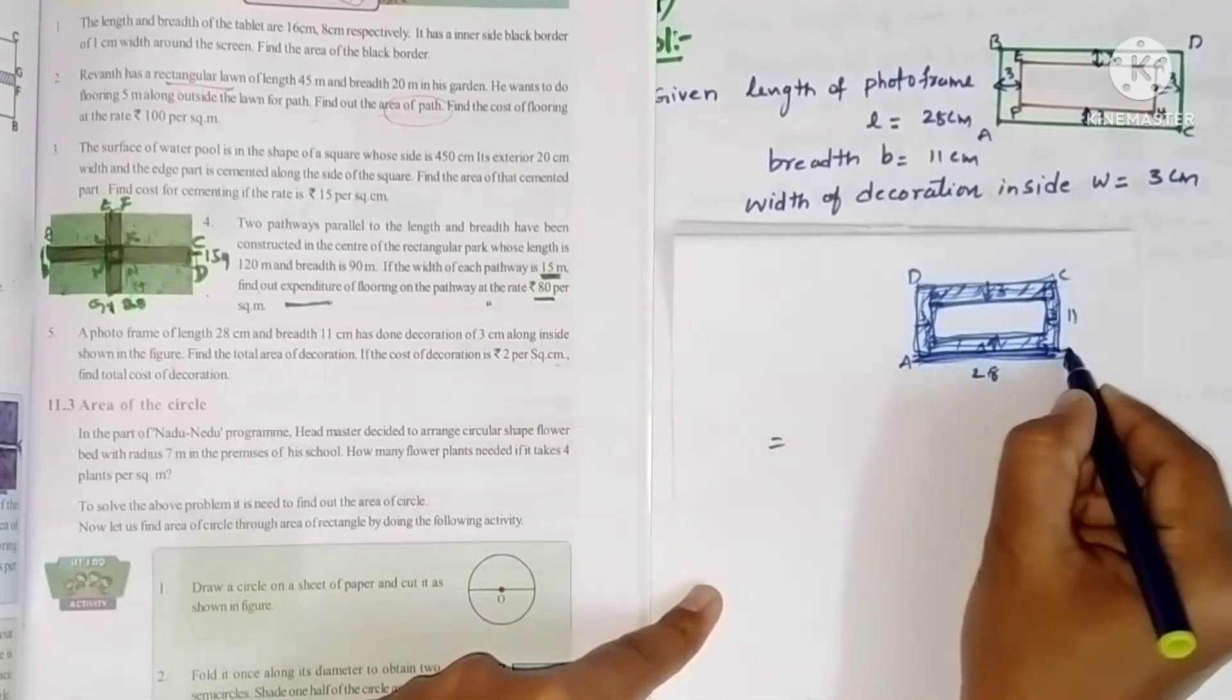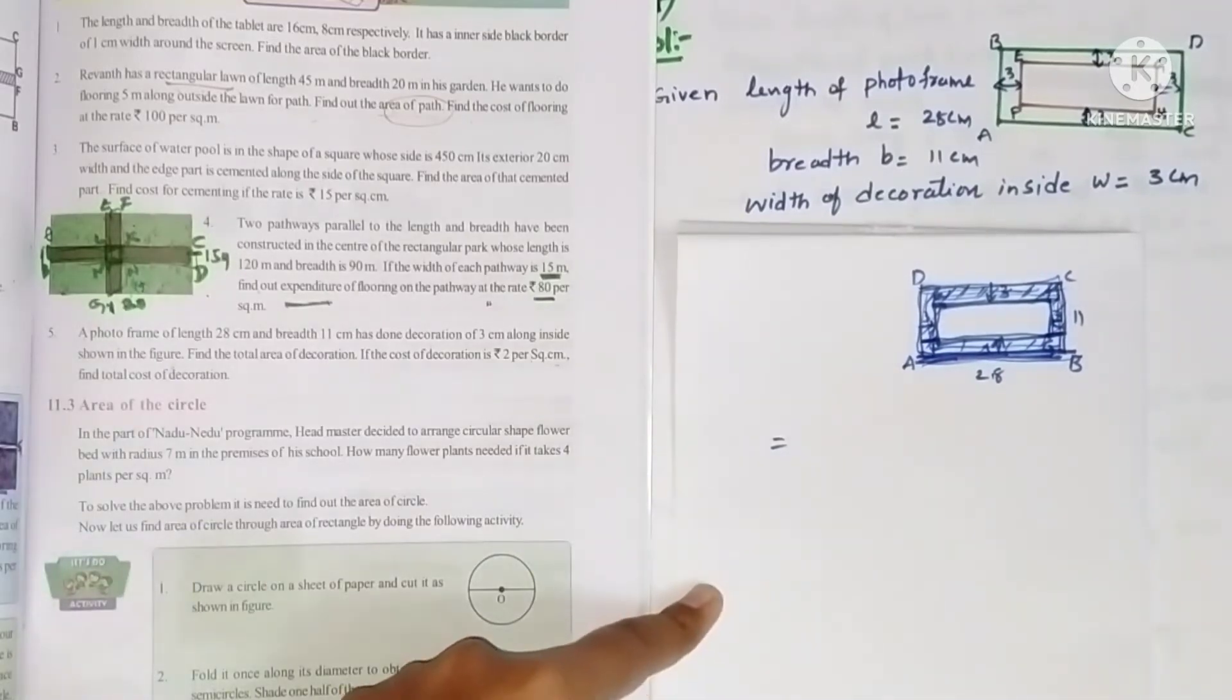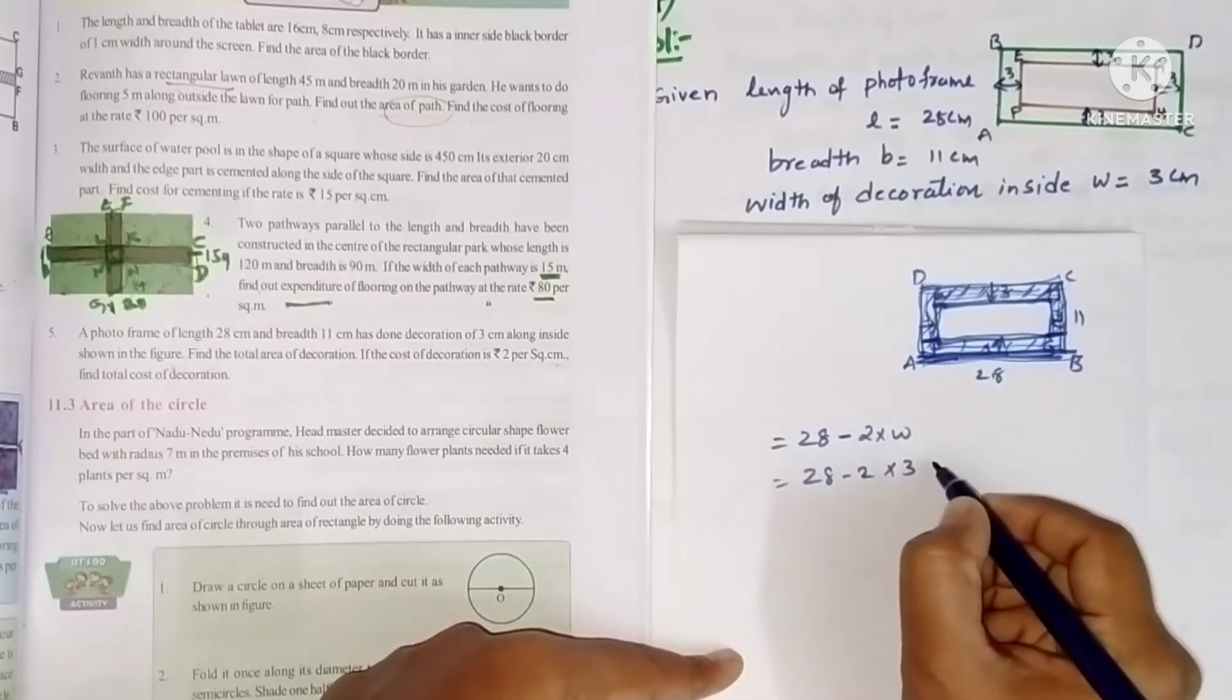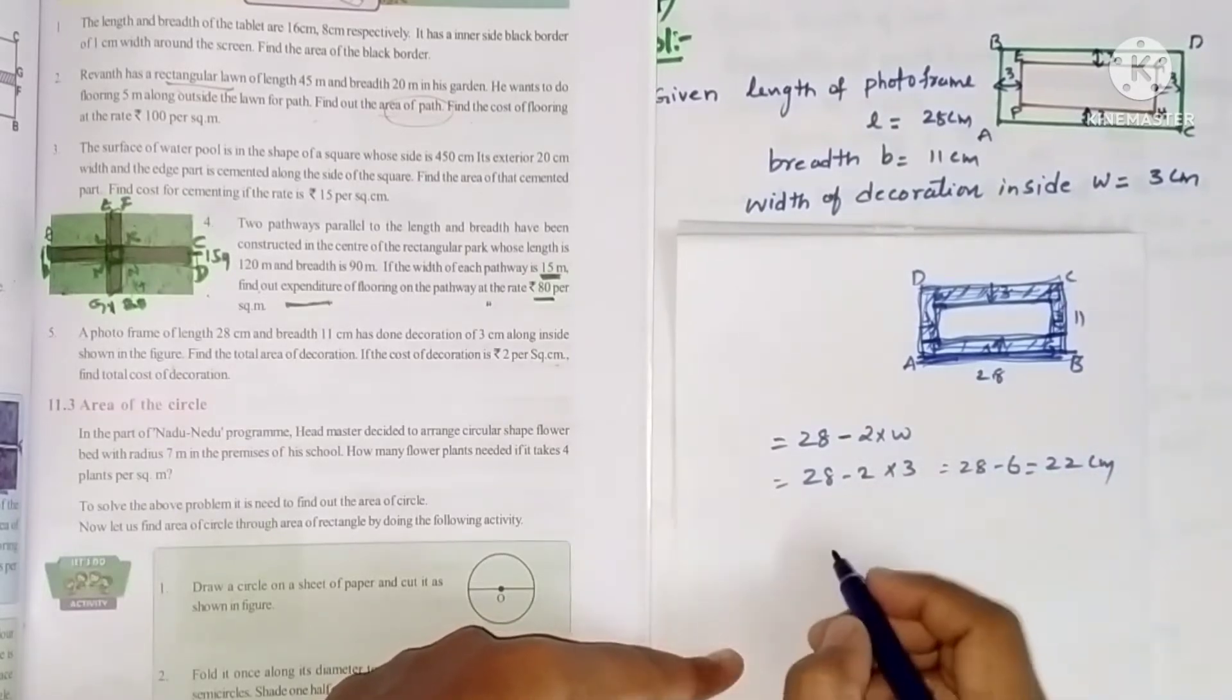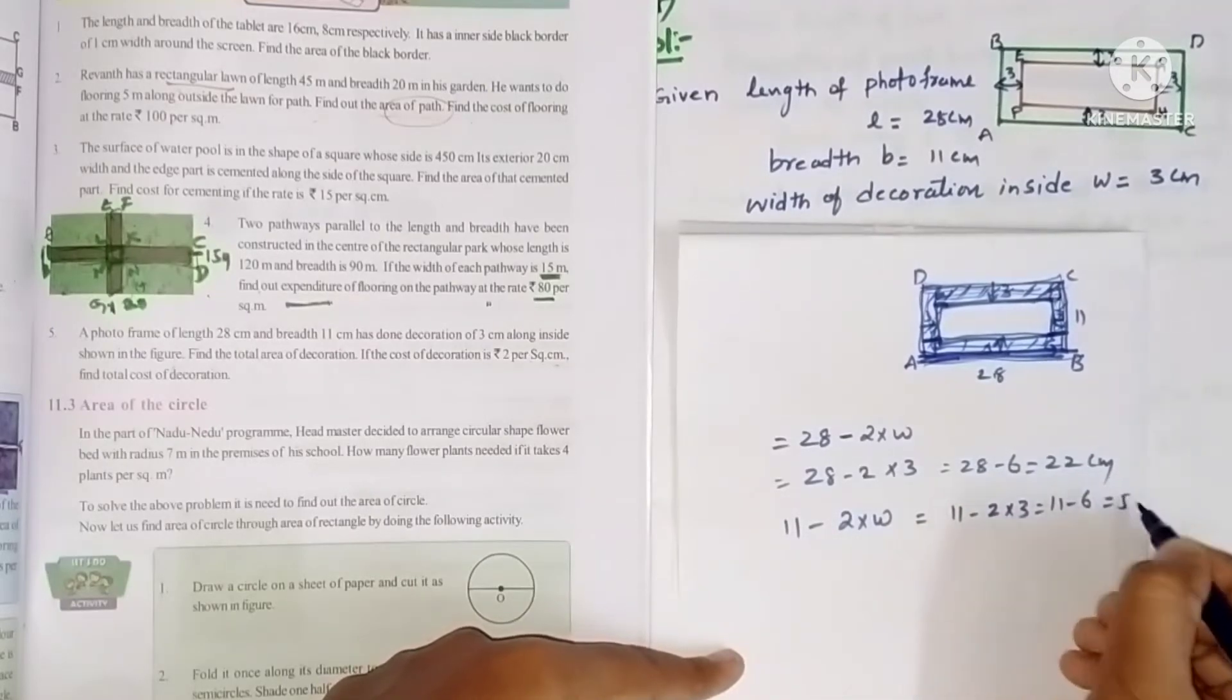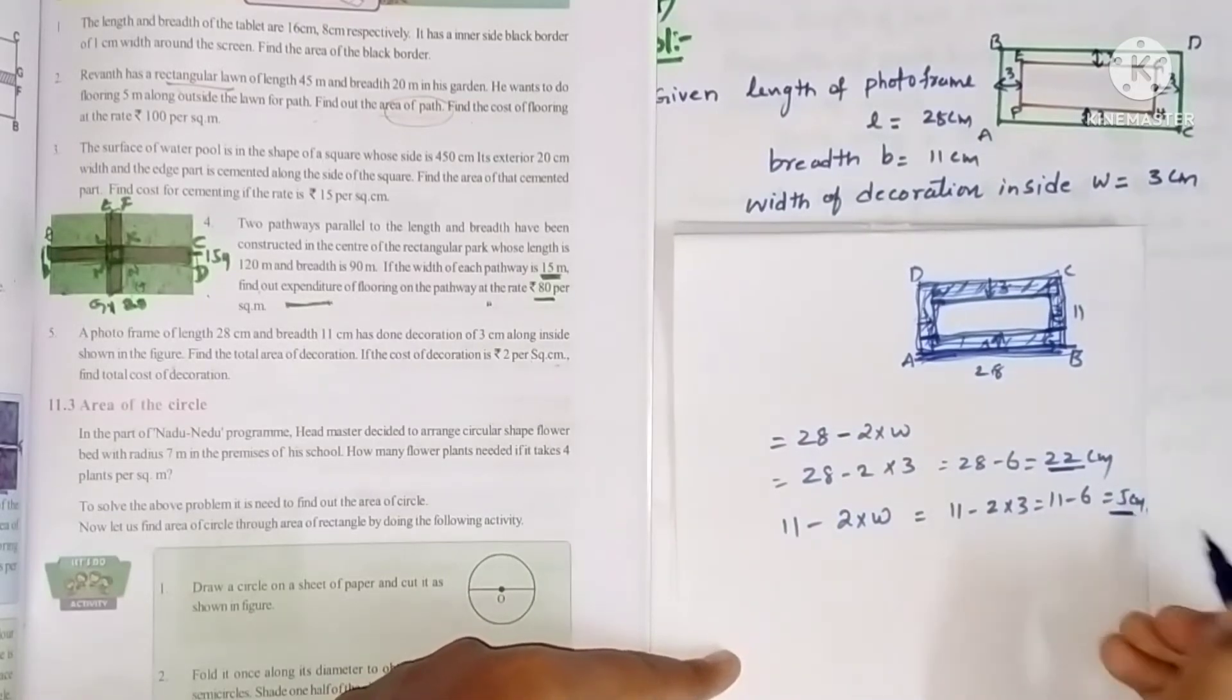This is the total length, and from this total length here width 3 meters and this side also width 3 meters extra is there. You have to separate them. So 28 minus 2 times of width, 28 minus 2 into 3, that is 6, 28 minus 6, that is 22. And breadth also 11 minus 2 into width, so 11 minus 2 into 3, 11 minus 6, that is 5 centimeters. So the length of EFGH rectangle will be 22 centimeters and breadth will be 5 centimeters.